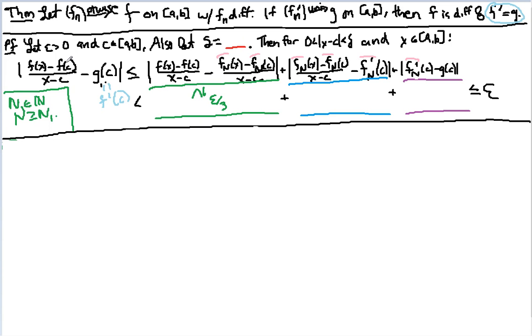The basic setup is the standard derivative way of proving that a derivative exists, just by taking the quotient minus whatever you think the limit is. In this case we think f prime is equal to g, showing it's less than epsilon.